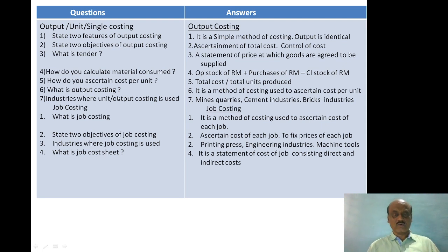What is output costing? It is a method of ascertainment of cost — specifically, a method of costing used to ascertain cost per unit.